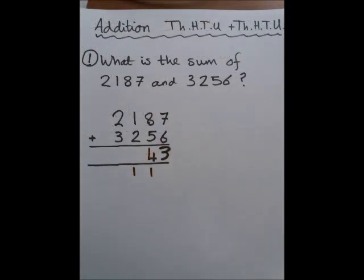In the next column, 8 add 5 is 13, but don't forget we've got a carrying digit, so that makes 14 altogether.